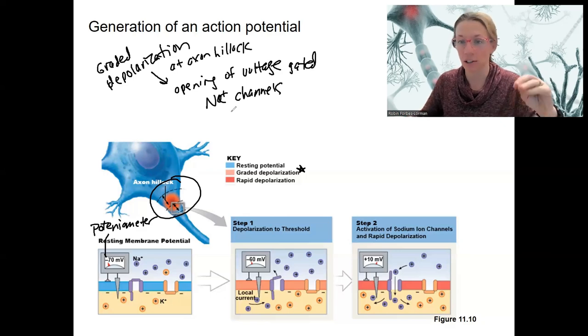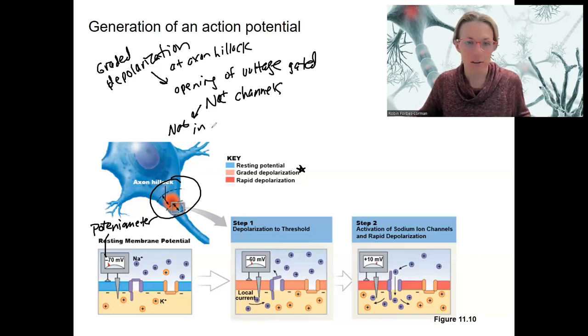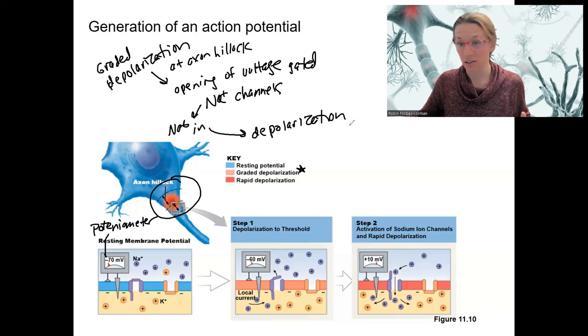The opening of voltage-gated sodium channels is going to cause sodium to flow into the cell, down its electrochemical gradient, very strong drive. That's going to cause more depolarization. That's going to open more voltage-gated sodium channels, more sodium in, depolarization. This is a positive feedback loop.